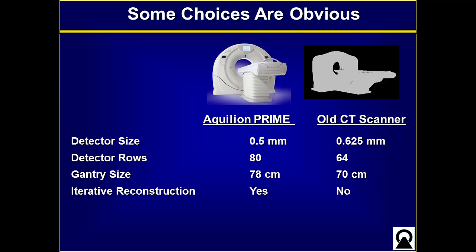Some choices are obvious. These are the choices I considered when looking at upgrading our CT scanner — frequently numerical choices that are easy to quantify. When we wanted to upgrade our scanner, I thought about having more detectors, smaller detectors, a larger gantry, and iterative reconstruction. These are easily quantifiable, and these choices are obvious.